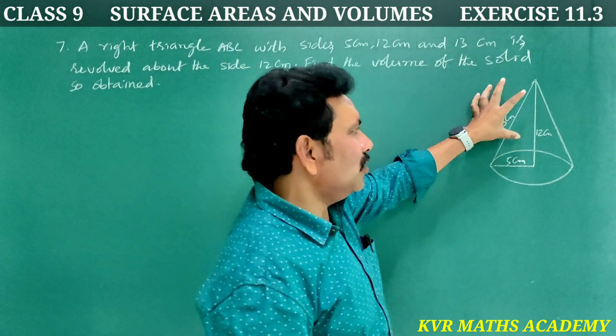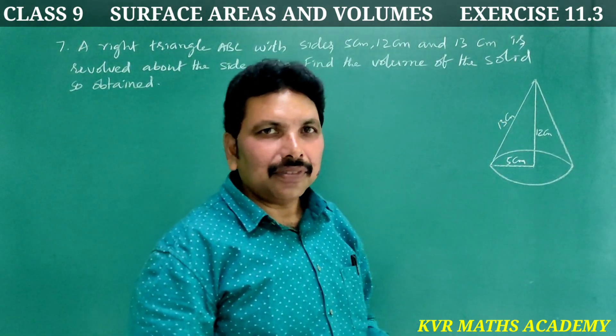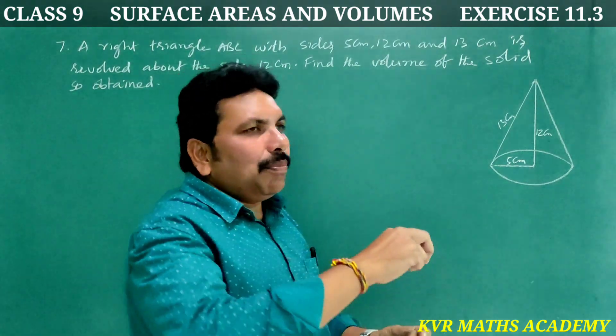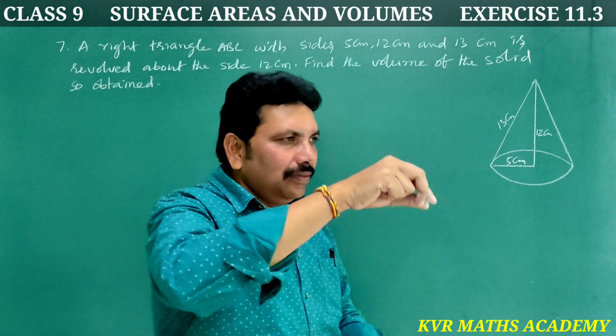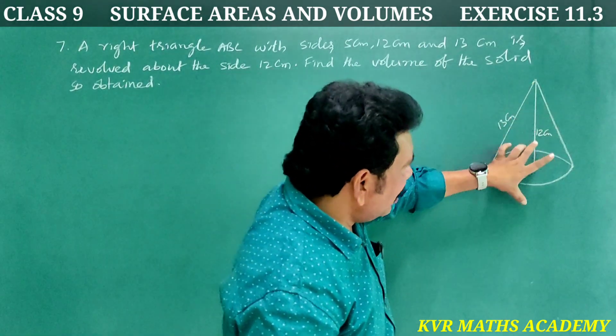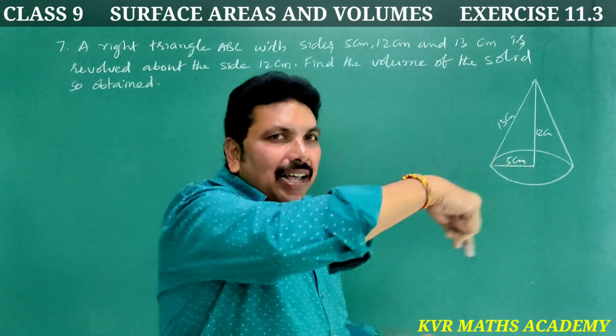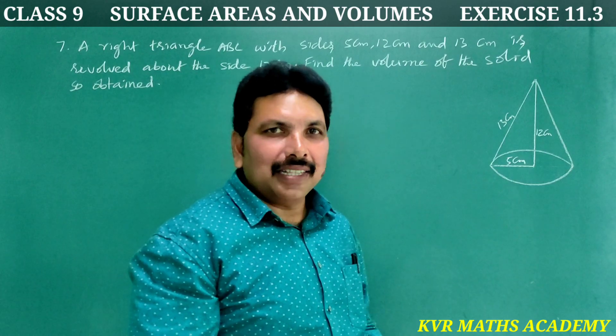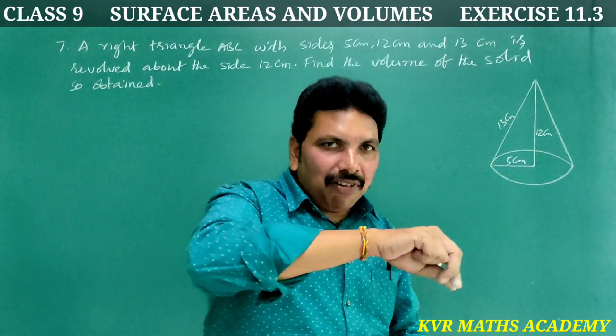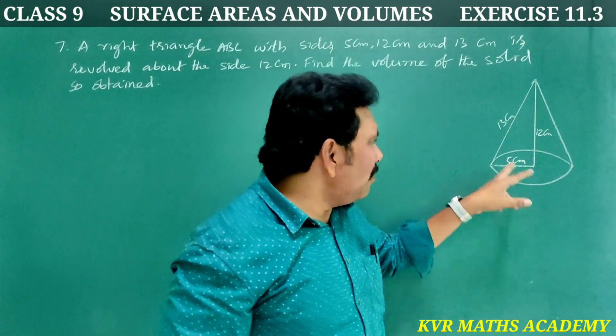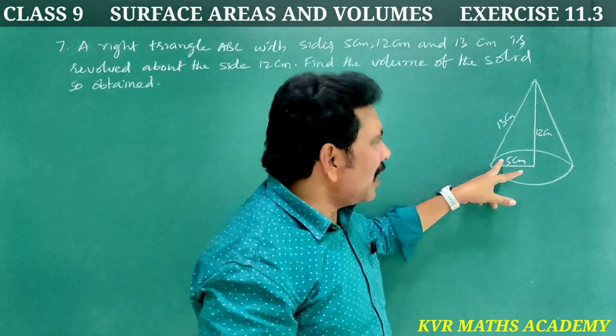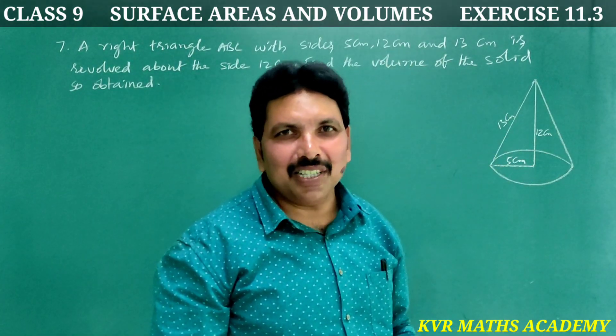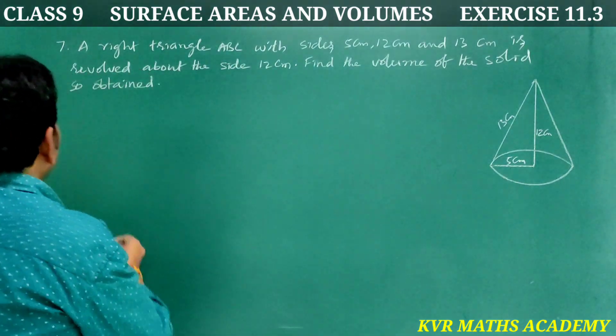A right angle triangle with sides 5, 12, and 13 centimeters is revolved about the 12 centimeter side. When you revolve the triangle about the 12 centimeter side, it forms a cone. So we need to find the volume of the cone formed.